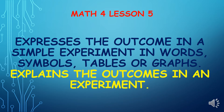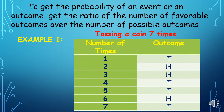Explains the outcomes in an experiment. To get the probability of an event or an outcome, get the ratio of the number of favorable outcomes over the number of possible outcomes.